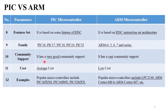PIC microcontroller has very good community support and ARM microcontroller has vast community support. Community support means this microcontroller is used in different organizations and agencies, and it has good customer support. PIC microcontroller has average cost as per its features, but ARM microcontroller has low cost as per its features.